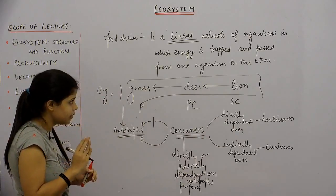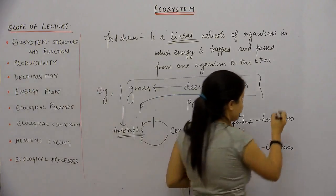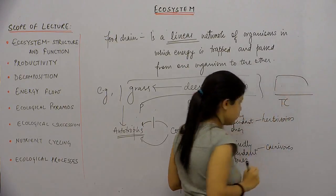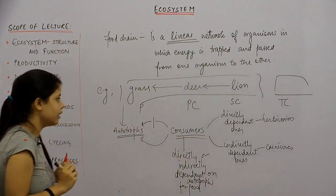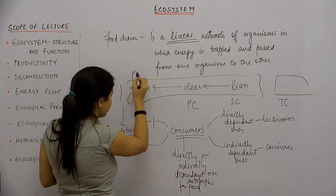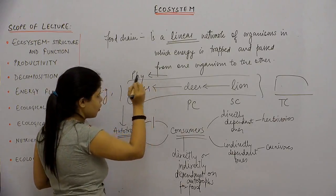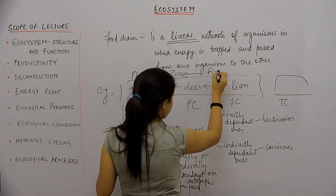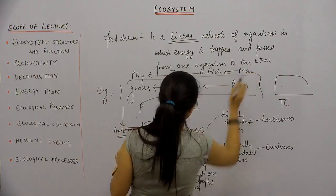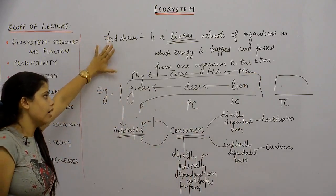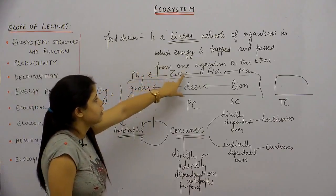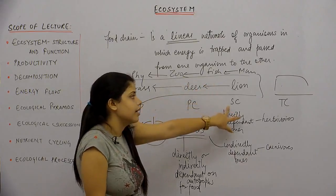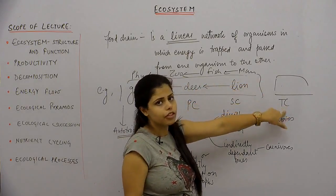There are even examples with a fourth trophic level — the tertiary consumer. For example: phytoplankton → zooplankton → fish → man. Here, phytoplankton is the producer, zooplankton is the primary consumer, fish is the secondary consumer, and man is the tertiary consumer.